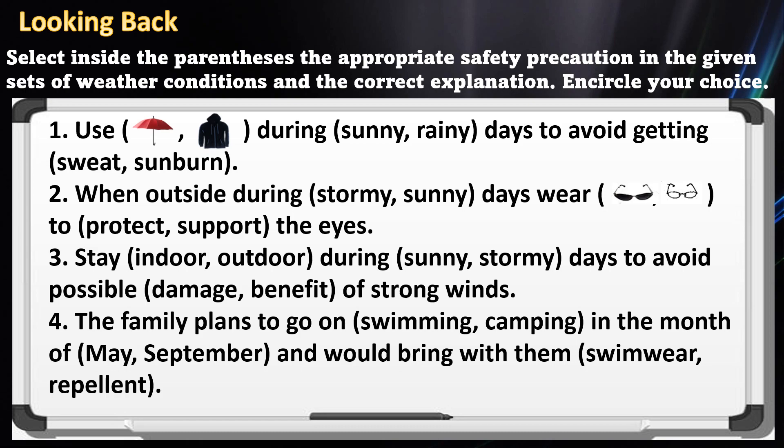Number one: use umbrella or jacket during sunny or rainy days to avoid getting sweat or sunburn. Two: when outside during stormy or sunny days, wear sunglasses or eyeglasses to protect or support the eyes. Three: stay indoor or outdoor during sunny or stormy days to avoid possible damage or benefits of strong winds. Four: the family plans to go swimming or camping in the month of May or September and would bring with them swimmer or repellent.